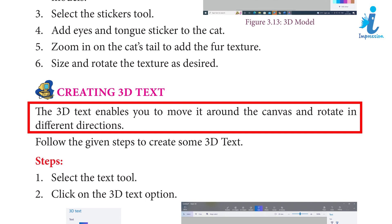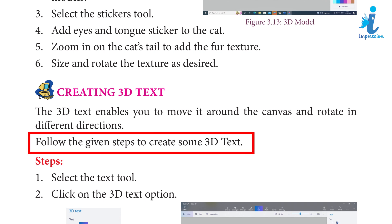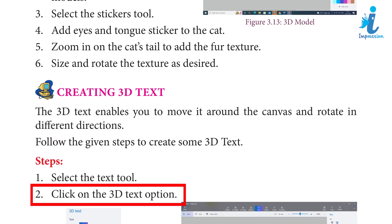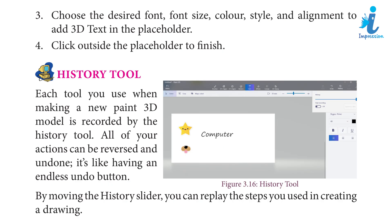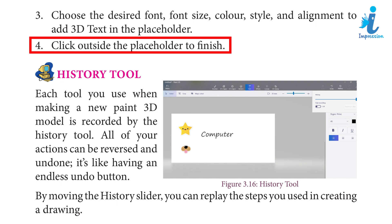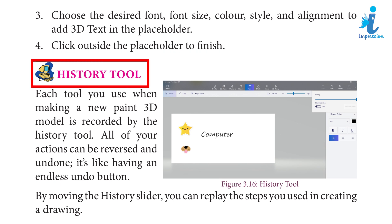Creating 3D text: The 3D text enables you to move it around the canvas and rotate in different directions. Follow the given steps to create some 3D text. 1. Select the text tool. 2. Click on the 3D text option. 3. Choose the desired font, font size, color, style and alignment to add 3D text in the placeholder. 4. Click outside the placeholder to finish.